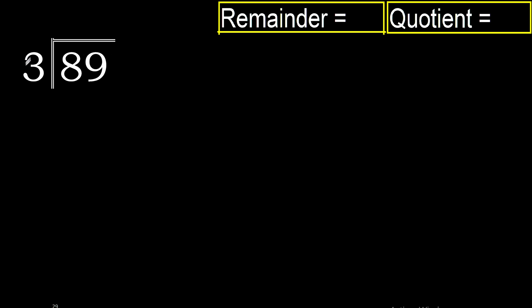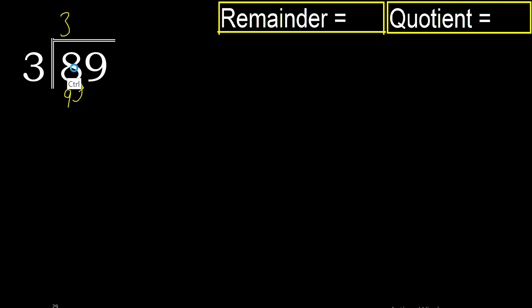89 divided by 3. 8 is not less than 3, therefore we work with 8. 3 multiplied by 3 is 9, but 9 is greater than 8, therefore not. 3 multiplied by 2 is 6, 6 is not greater than 8, and 6 is the closest, therefore ok. 8 minus 6 is 2.